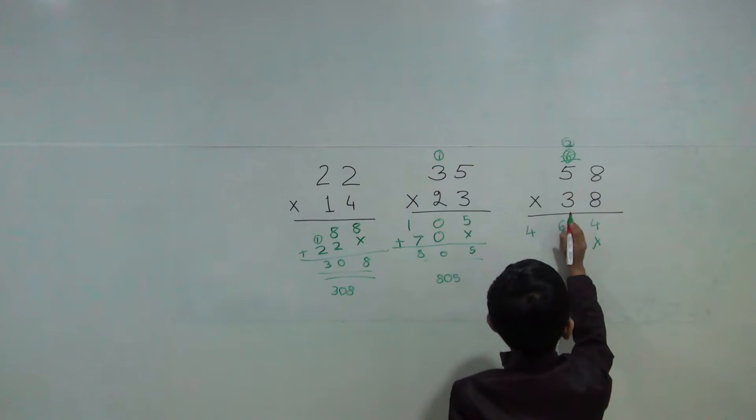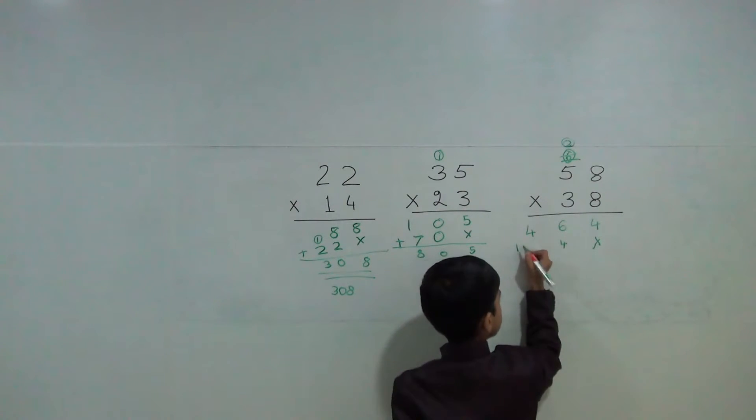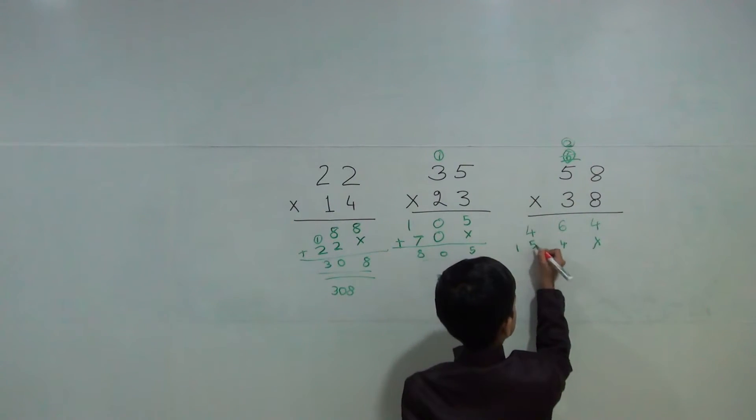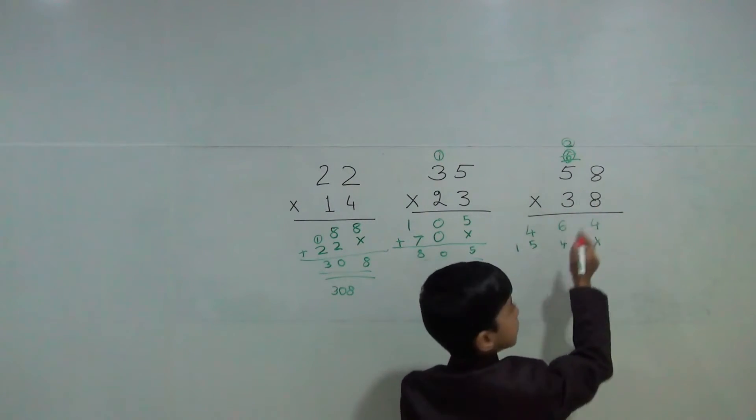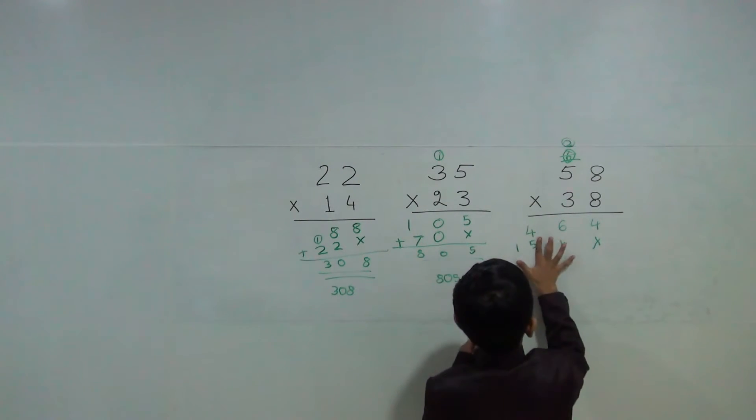So 3 times 5 are 15. 1, 5. 15 plus 2 is 17. 1, 7.